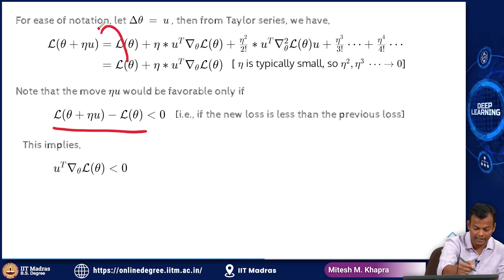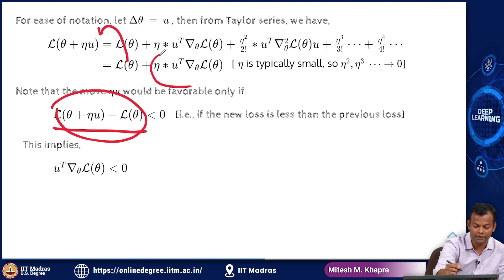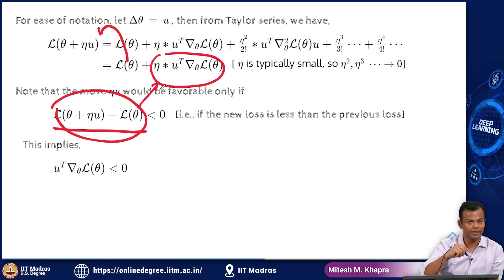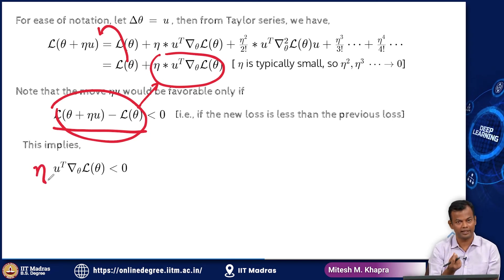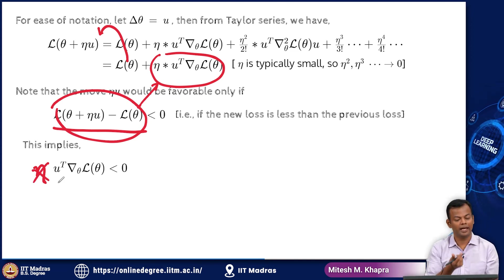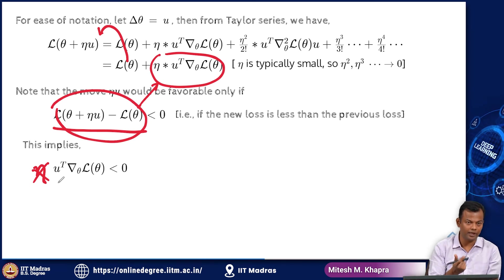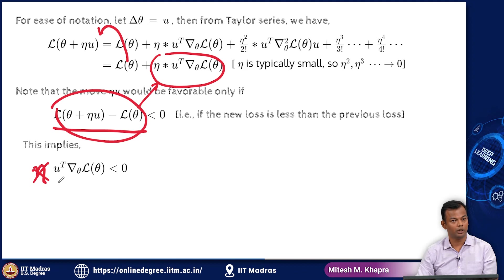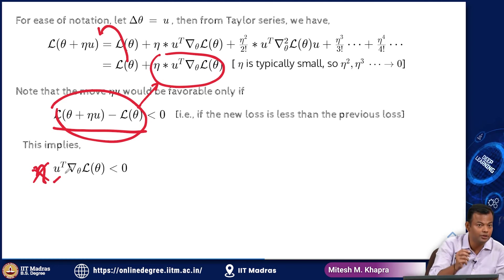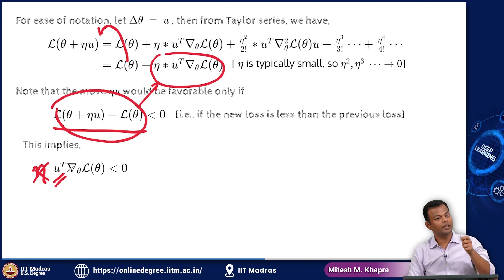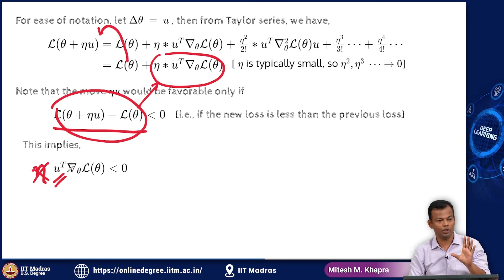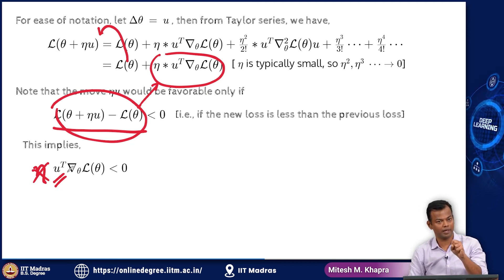If I take L(theta) to the other side, I am left with the quantity that I want to be less than 0, which is just equal to eta times u^T times the gradient. I have omitted eta here because eta is a positive scalar, so it will not affect the sign. And this condition — u^T dotted with the gradient should be less than 0 — is what has been arrived at from the Taylor series. I have to select a u such that the dot product of u with the gradient vector is less than 0.